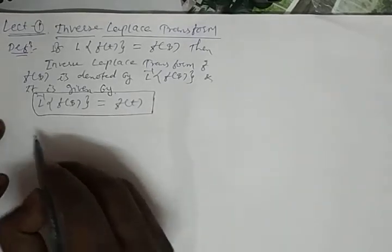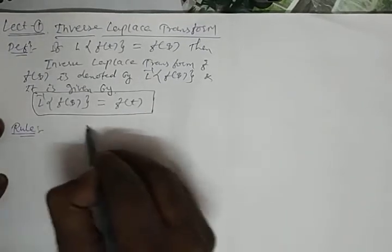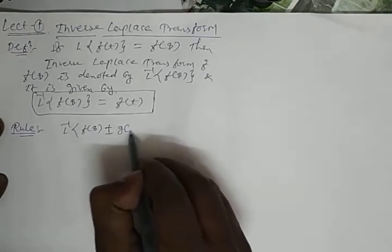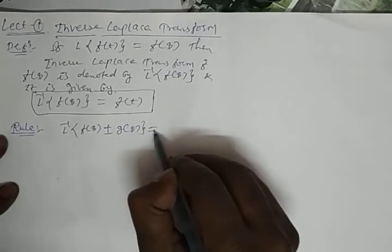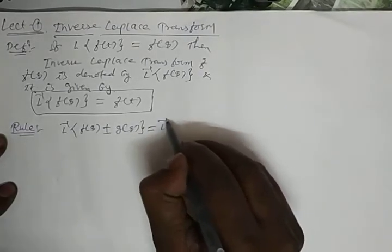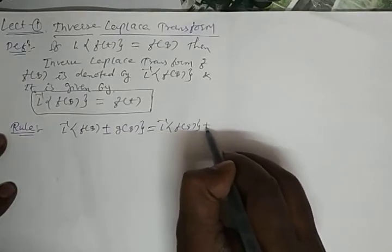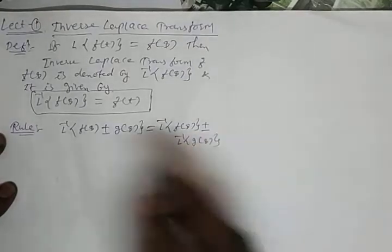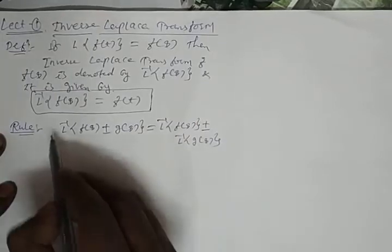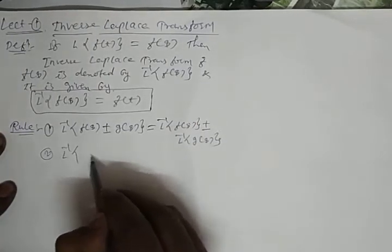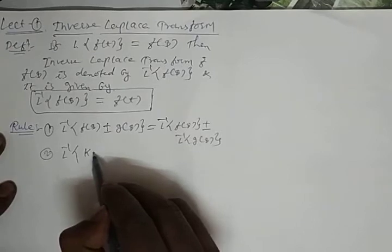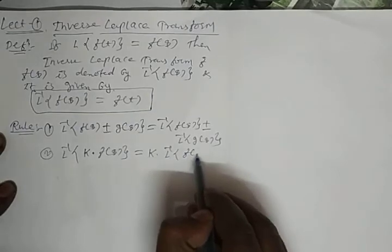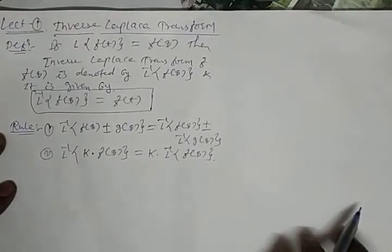Now let us see some rules. L⁻¹{F(s) ± G(s)} can be separated as L⁻¹{F(s)} ± L⁻¹{G(s)} — that means we can separate these terms. Next, L⁻¹{k·F(s)} can be written as k·L⁻¹{F(s)}, meaning if there is a constant term we can take it outside.